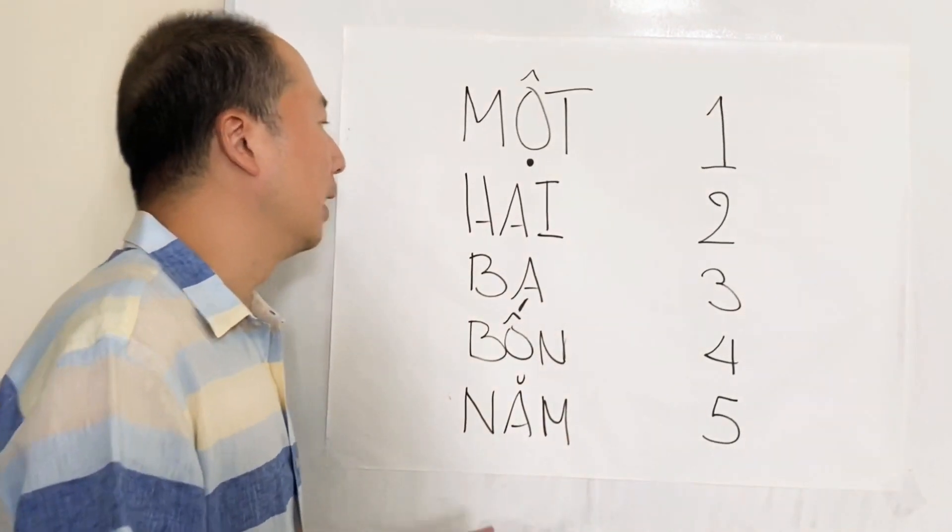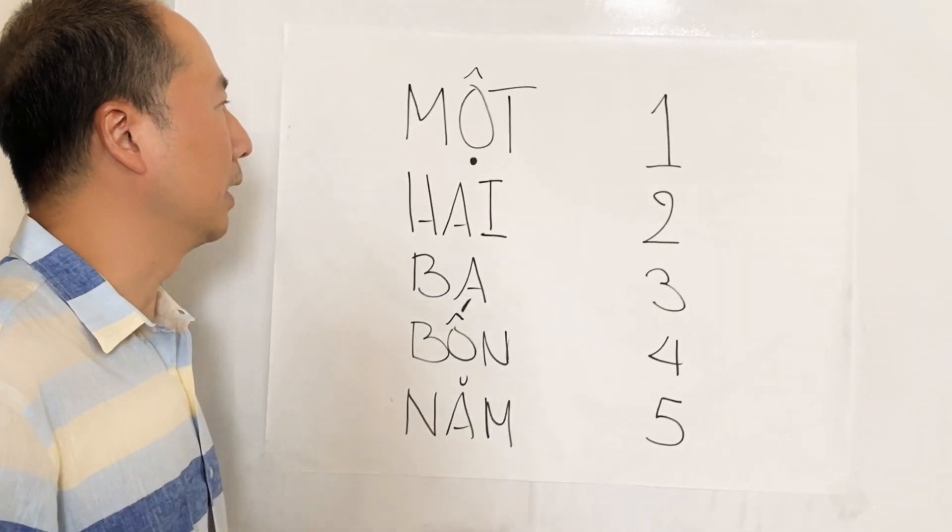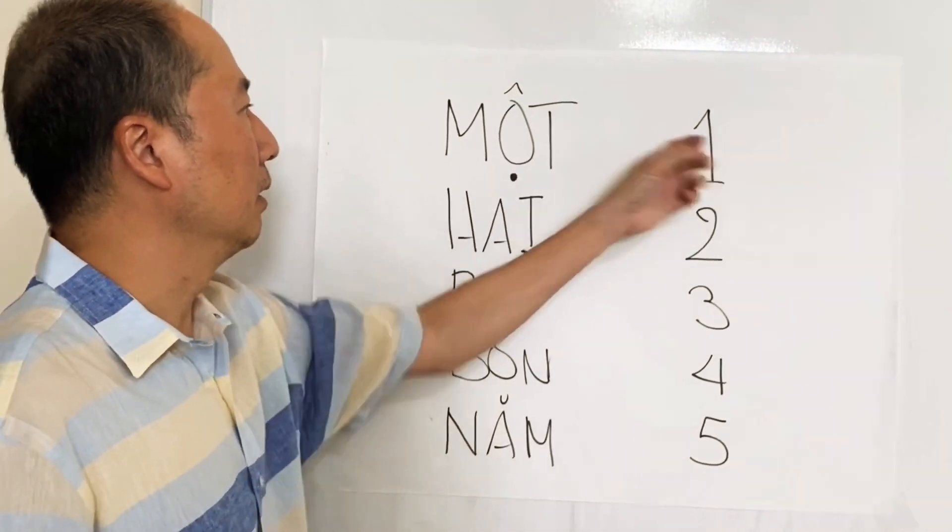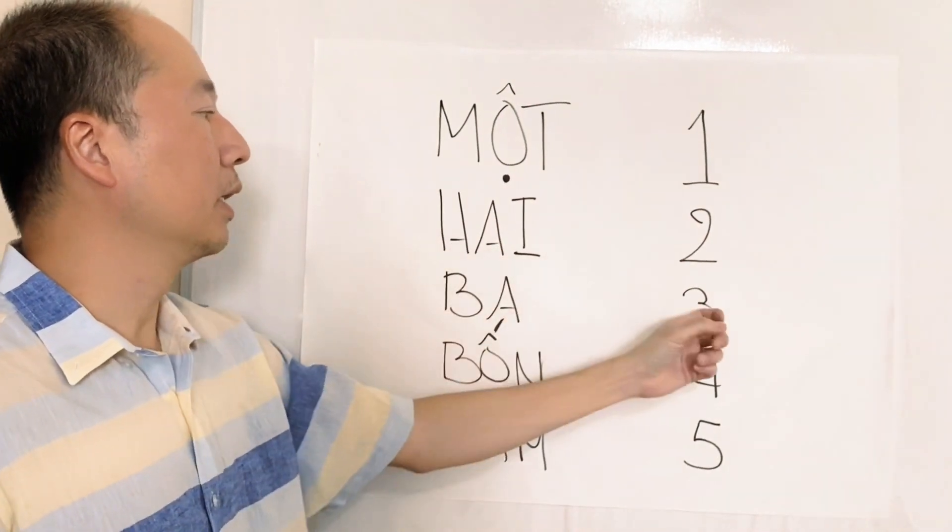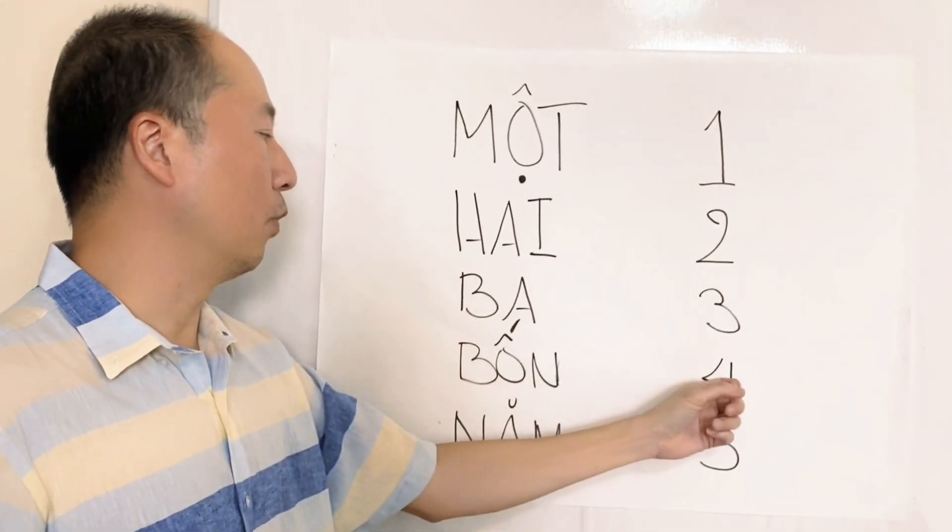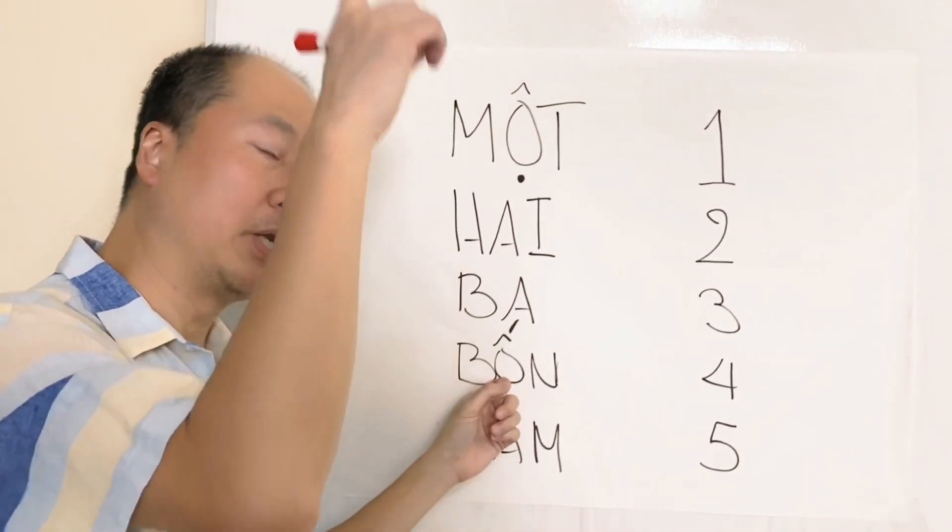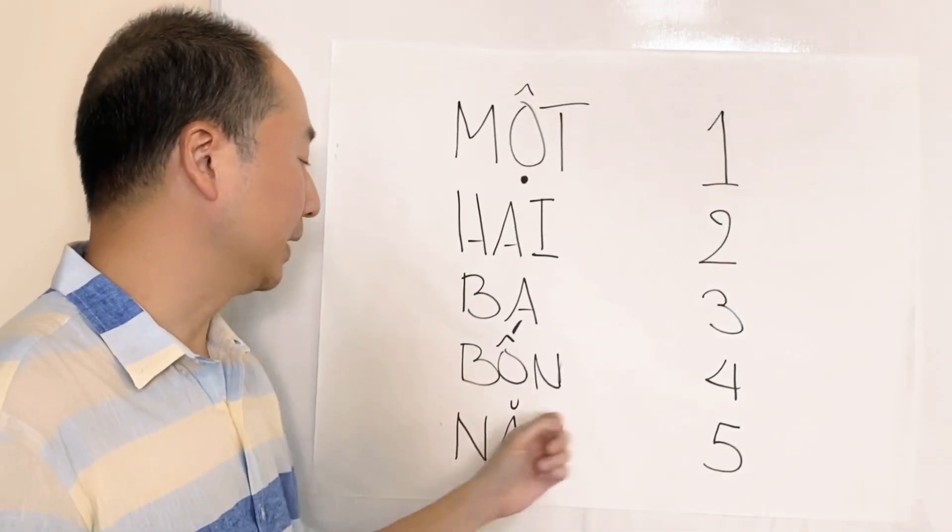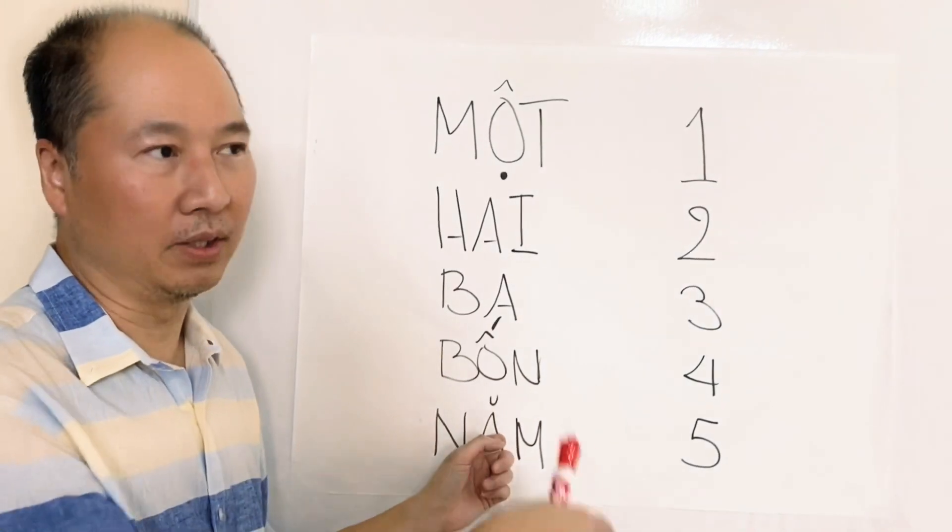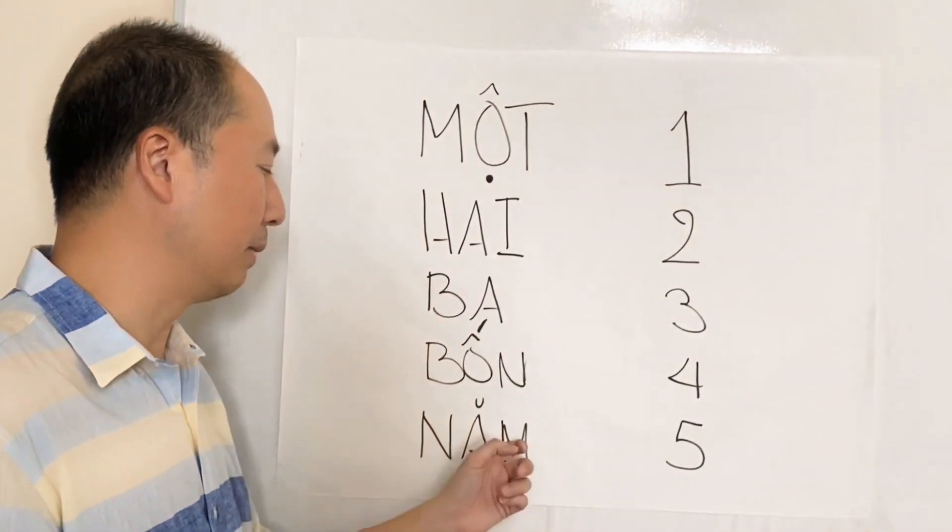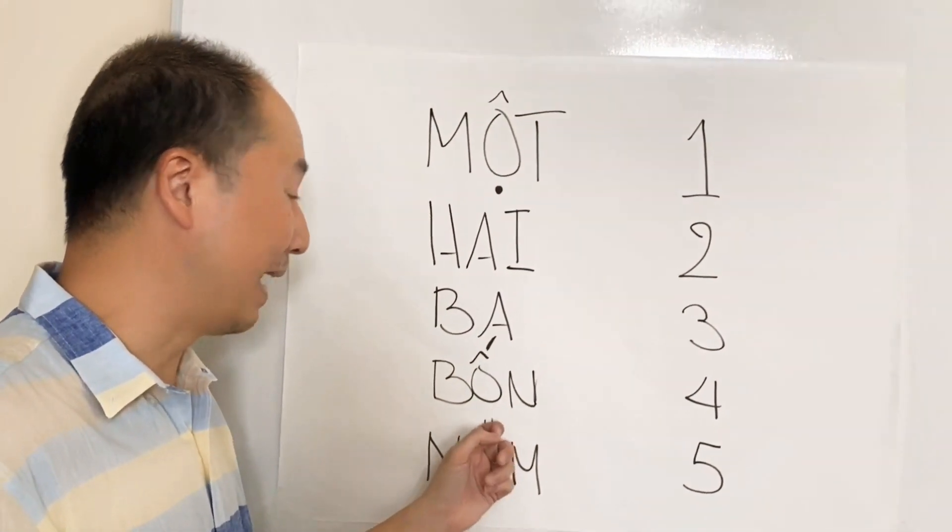So let me wrap up here. I'm going to keep this video short. One is một, two is hai, three is ba, four is bốn. Again, remember to go up. Five is năm, not nam. Nam is like the south or the name of our country. So this is năm. Let me repeat again. One is một, two, hai, three, ba, bốn.